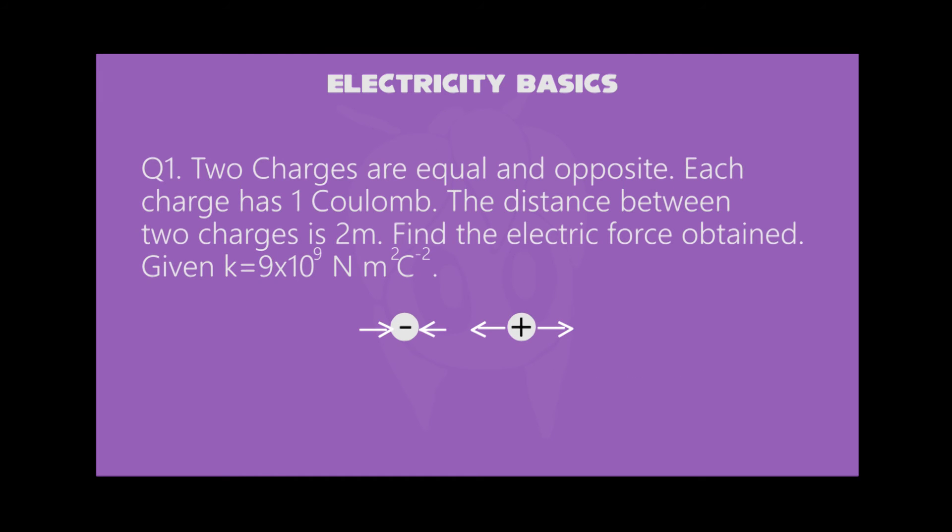You may like to solve this question as an example. From electric force, two charges are equal and opposite. Each charge has one coulomb. The distance between two charges is two meters. Find the electric force obtained. The answer is 2.25 times 10 to the 9th newton in negative direction.